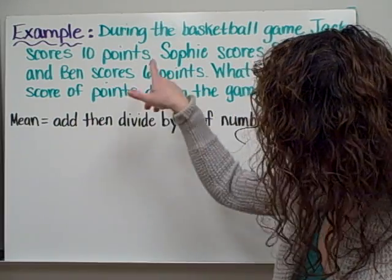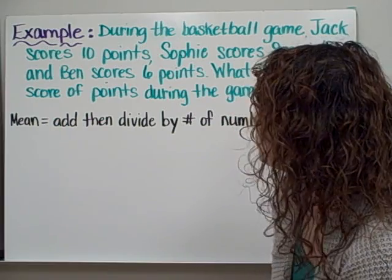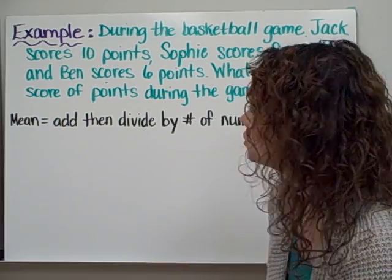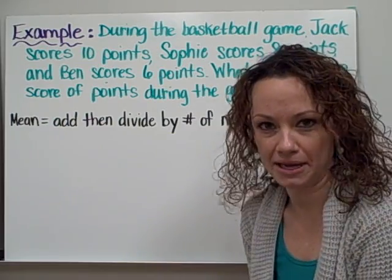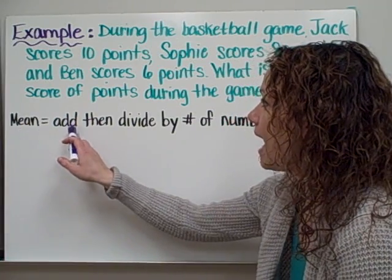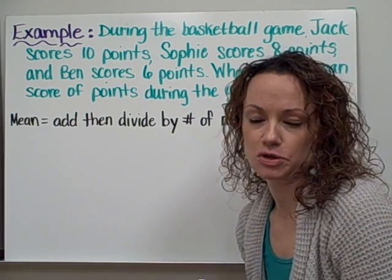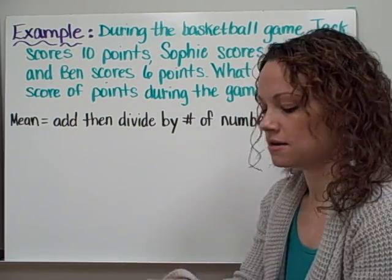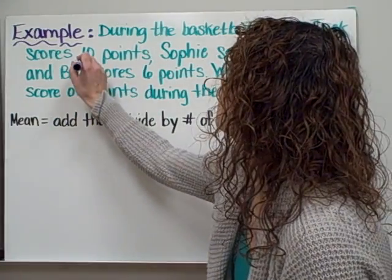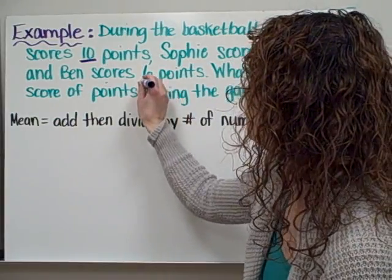Let's move into our first example. During the basketball game, Jack scores 10 points, Sophie scores 8 points, and Ben scores 6 points. What is the mean score of points during the game? To find the mean, you add up all the numbers, and then divide by the amount of numbers given to you in the problem. I'm going to underline my important information: 10 points, 8 points, and 6 points.